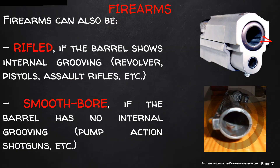Firearms can be further categorized based on barrel features. Rifled weapons contain parallel grooves cut into the inside of the barrel that grip the bullet as it exits the firearm, providing a spin — a spinning bullet remains more stable along its pathway. There are also weapons with smooth barrels that do not contain any grooves, and bullets fired from these are not well stabilized after firing.